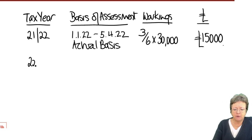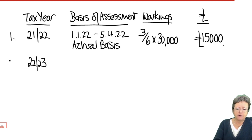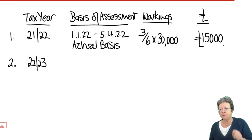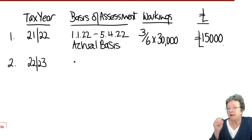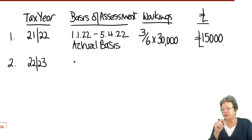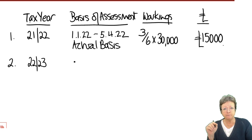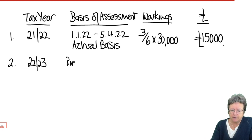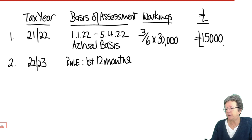That was year one — 21-22. Now the next tax year, 22-23, is the second tax year. The question we ask: is there a set of accounts with a year-end that falls in this tax year? The answer is yes. However, that set of accounts — to the 30th of June 2022 — is short; it's not 12 months long. The rules say you would be taxed on 12 months' profits but we only have six. So if you go down the flowchart, the rule is the first 12 months of profits.